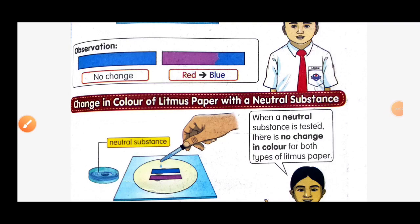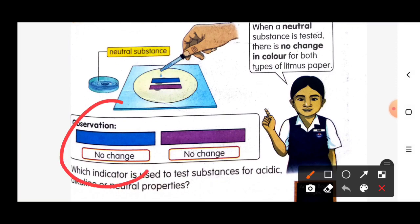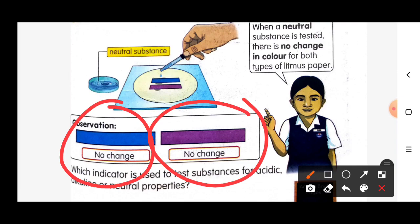Number three - let's discuss the change in color of litmus paper with a neutral substance. When a neutral substance is tested, there is no change in color for both types of litmus paper. If we test the neutral substance on the blue litmus paper, there's no change. And if we test it on the red litmus paper, there's also no change - both show no change in color.